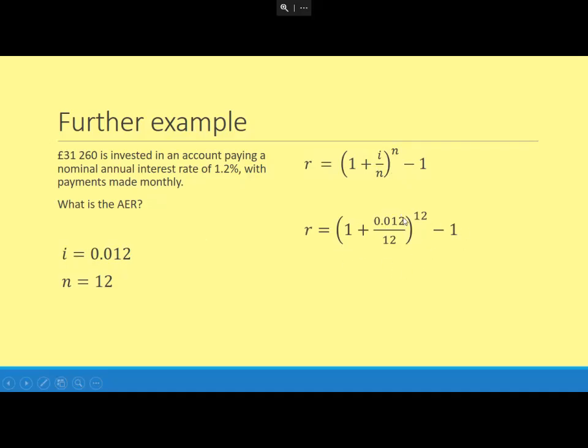Type that in, careful with your brackets, make sure that's an index power, and then you get this number here. So R is 0.012066, and remember that's as a decimal. So 0.0121—you might prefer to write that as 1.21%. I multiplied by 100 to get that. So 1.2% nominal interest rate being paid monthly, and I know it's not much different, but 1.21%—that extra 0.01% can really build up and make a difference.